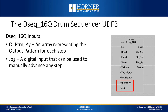Next we'll talk about Q or the output pattern array. For every step in your sequence you have an output pattern that the drum sequencer will set its outputs to. That means there are 16 bits per step for setting each of the 16 outputs — an array of 16 integers where the least significant bit in each integer is the first output and the most significant bit is the last output. Finally, there's a jog input — a digital input we can use at any time to manually advance past any step. Regardless of how that step is normally configured to advance, when jog is pressed in an off-to-on transition it moves to the next step.